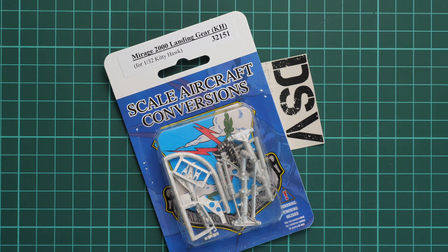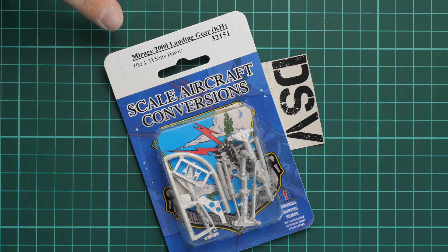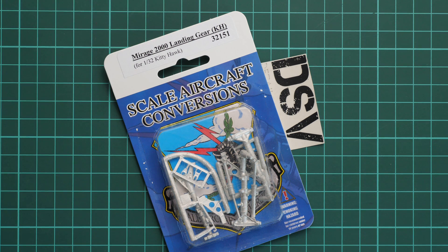Hello everyone, today we have a new video review and we're going to check a fresh release from Scale Aircraft Conversions. This time the set is made in 1/32 scale and should come in handy with Kitty Hawk plastic. As you can see, it's designed for use with Mirage 2000 and it copies the landing gear.